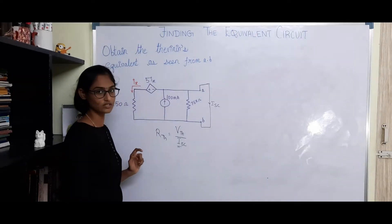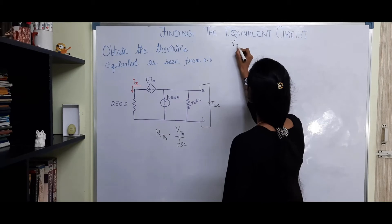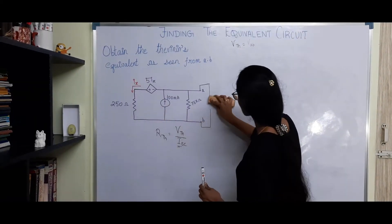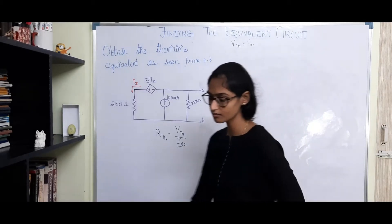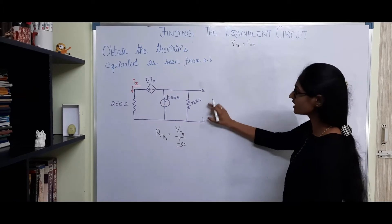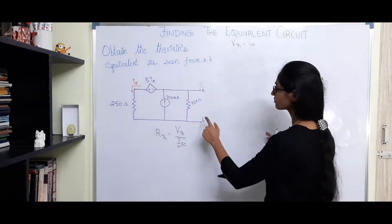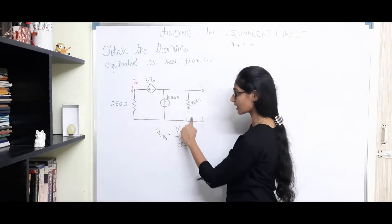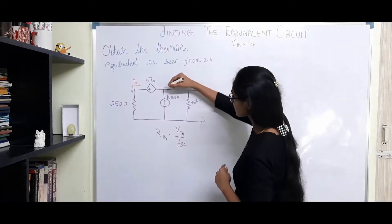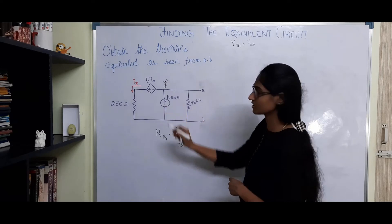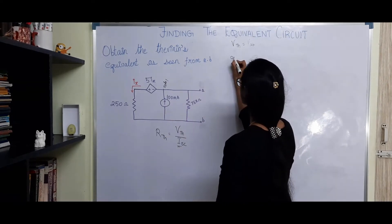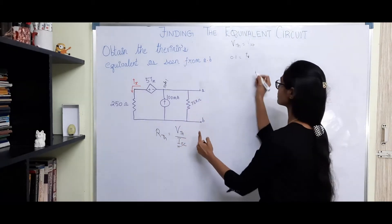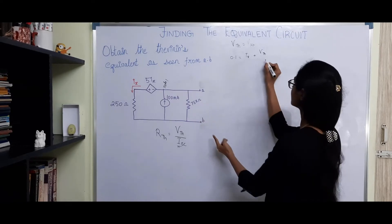Let's see how to solve this circuit. First, we have to find Vth — the Thevenin's equivalent voltage, or the voltage across terminals A and B. For that, we need to open the load terminals A and B and then find Vth. To find Vth, we need to know the current Ix. Only if we know Ix can we apply KVL to the outer loop and find Vth. So I am going to use Kirchhoff's current law at node 1. Applying KCL gives: 0.1 A = Ix + Vth / 7500.